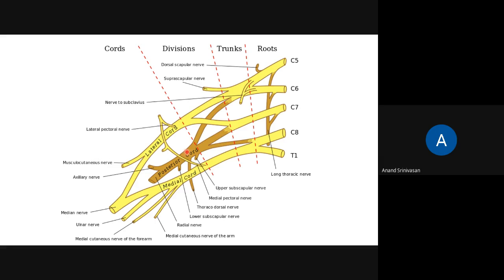You need to know accordingly. Sometimes instead of asking about the posterior cord, they may give any branch from the posterior cord. The mnemonic is ULNAR: Upper subscapular, Lower subscapular, then the radial nerve and the axillary nerve - all these are branches from the posterior cord. So they may give any one of these branches and ask which nerve is being affected if there is an injury to the C8 spinal nerve. It can be difficult, but once you practice, it is easier.